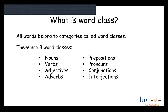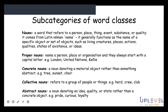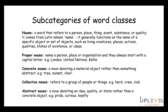Within the eight word class categories there are also subcategories. A noun is a word that refers to a person, place, thing, event, substance, or quality. It comes from the Latin 'nomen' meaning name, and it generally functions as the name of a specific object or set of objects — living creatures, places, actions, qualities, states of existence, or ideas.